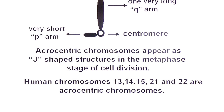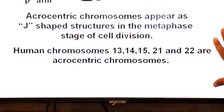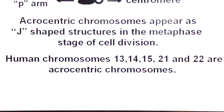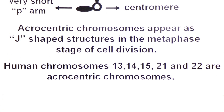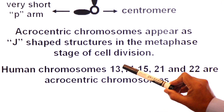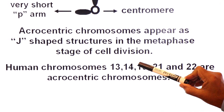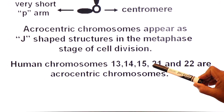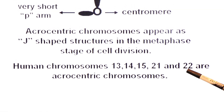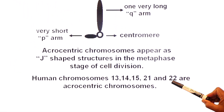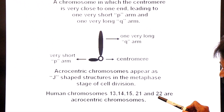Examples of acrocentric chromosomes in the human karyotype: human chromosome numbers 13, 14, 15, 21, and 22 are all acrocentric chromosomes.